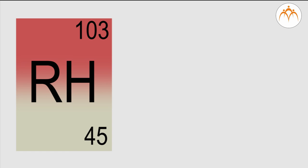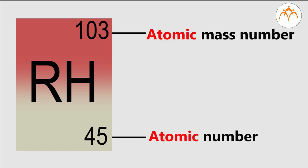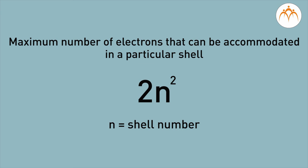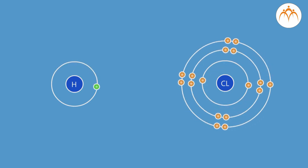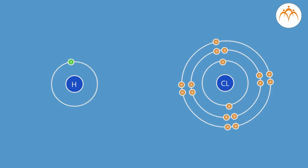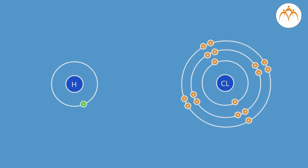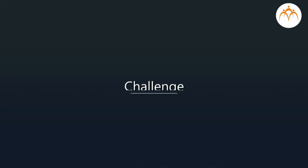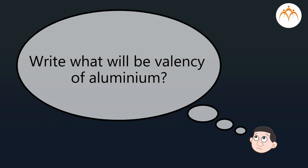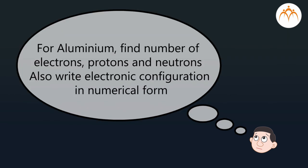Summary: In this video, we learnt about atomic number and atomic mass. The maximum number of electrons in a particular shell is given by the formula 2n², where n is the shell number. Valency equals valence electrons if there are 4 or fewer, and equals 8 minus valence electrons if the outermost orbit has more than 4. Now, answer the following questions: What will be the valency of aluminium? For aluminium, find the number of electrons, protons, and neutrons, and write the electronic configuration in numerical form.